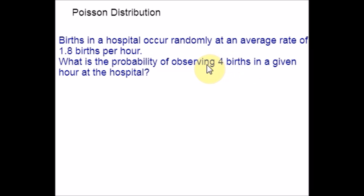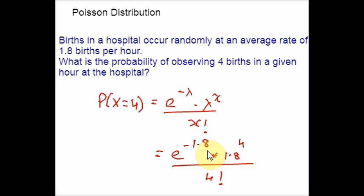Let us identify the given information and plug those values in the formula. We can now use the formula to calculate the probability of observing exactly 4 births in a given hour. Let me rewrite the same question in symbolic form. Now, all we have to do is solve this algebraically. I am using a calculator. So I get 0.0723. This example is exact case.